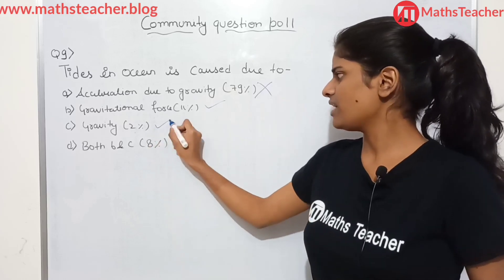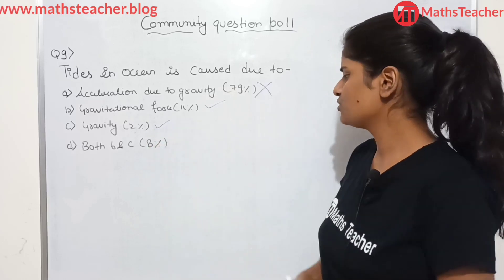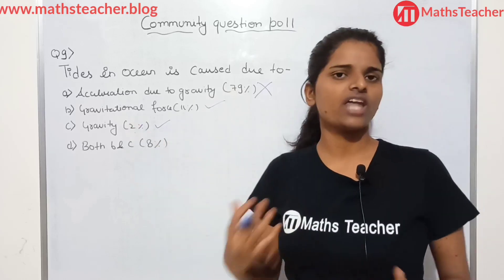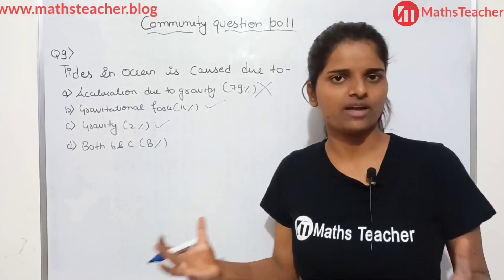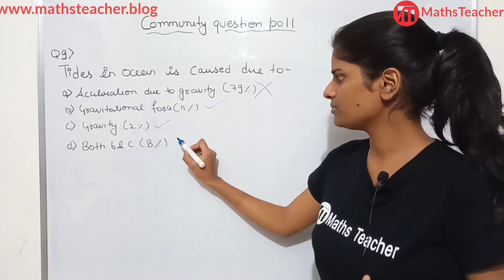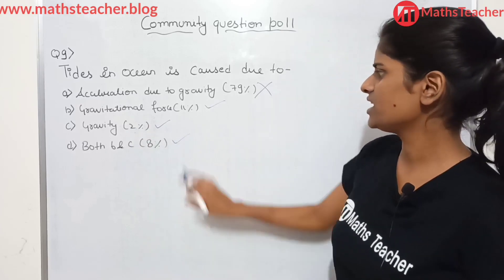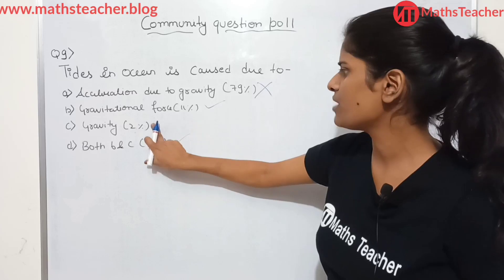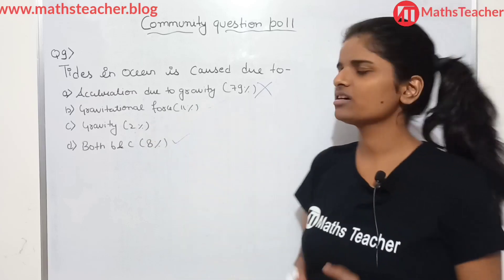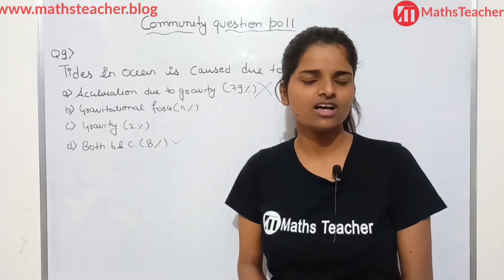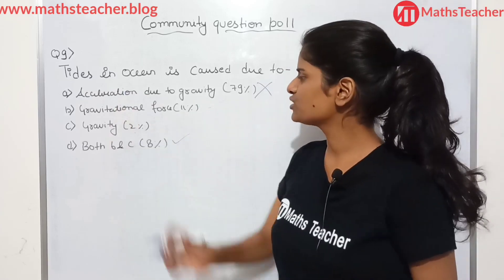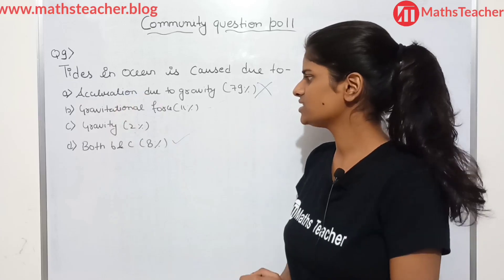Next is option C, gravity — 2% of people have given it. Gravitational force is called gravity, that's why I kept option D. B and C, which 8% of the kids have marked. Those who marked option D, congratulations — your answer is correct. Option D is the correct answer for question number 9.